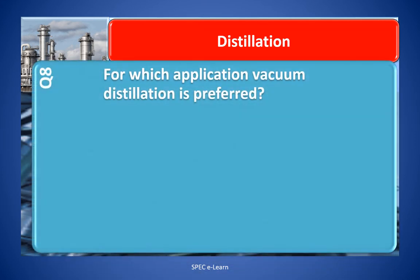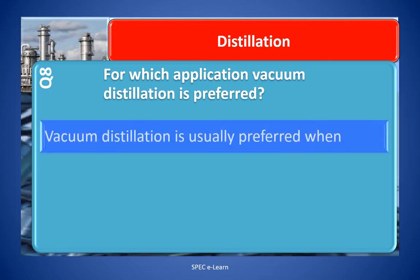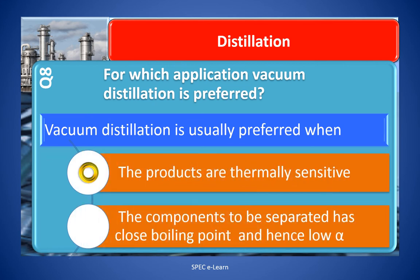Question number 8: For which application is vacuum distillation preferred? Vacuum distillation is usually preferred when the products are thermally sensitive and the components to be separated have close boiling points, hence low relative volatility.